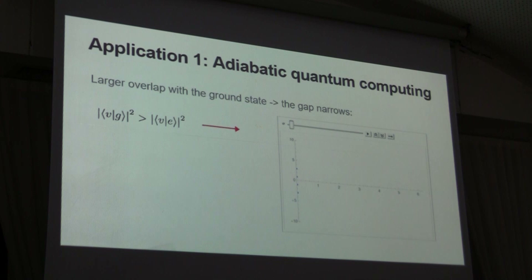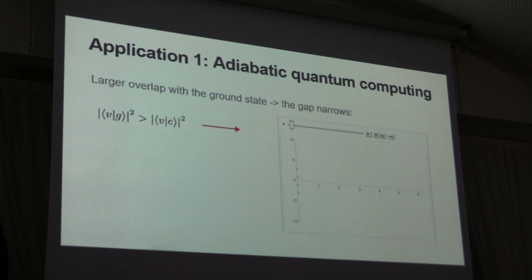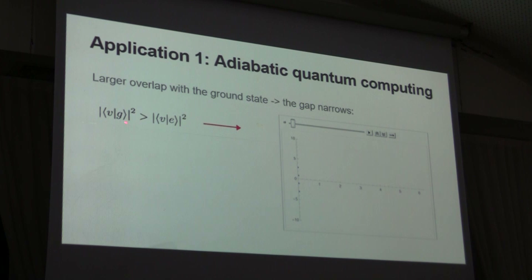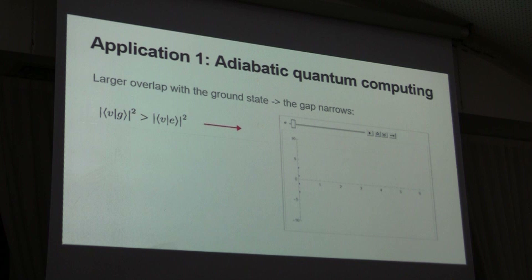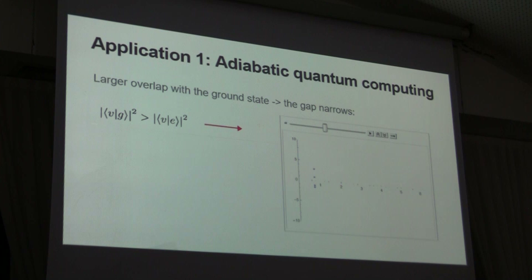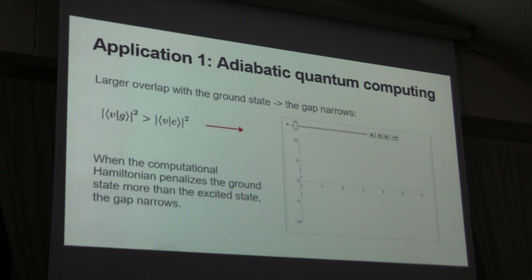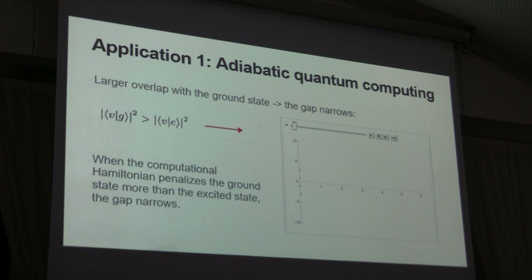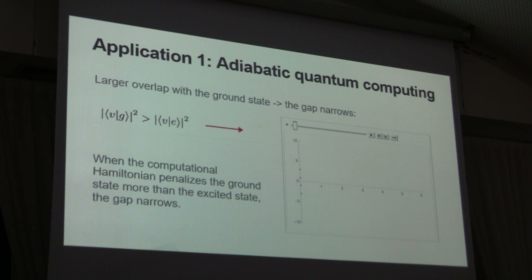What we learn from Newton's Cradle is that when the overlap between the projector and an eigenstate is larger, the velocity with which the eigenvalue moves as you change the coupling constant is also larger. It turns out that when the overlap between the ground state and the projector is larger than the overlap with the excited state, the gap narrows — because the ground state moves faster upward than the excited state. You can see that the gap narrows in the animation.